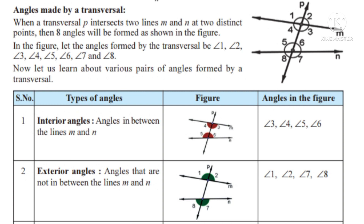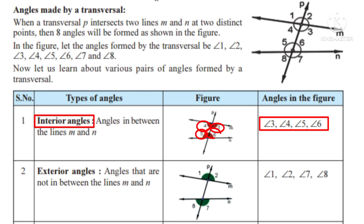Now let us see the different types of angles. Number 1: interior angles, that means inside angles. The angles which lie between the lines M and N are interior angles. They are angle 3, angle 4, angle 5 and angle 6.